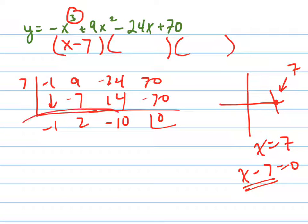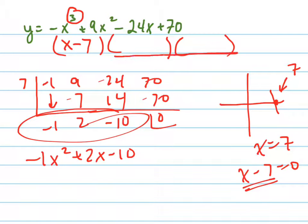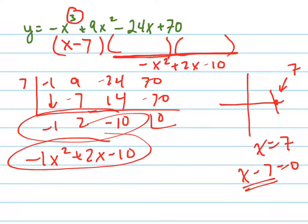So we see that negative one x squared plus two x minus 10 is our other factor. So that's what these two things multiply to right here. Those two linear factors multiply to negative x squared plus two x minus 10, which means all I need to do is now factor this. Well, it doesn't factor because they're not integers, and so we're going to have to use another method.